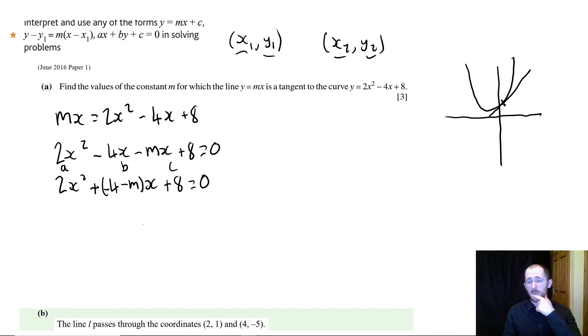Now a is the number in front of x squared, b is the number in front of x, and c is here. So now we need to think about solving this. Well, I can't really use the quadratic formula, because I have an unknown in it, which is no good. So what else can I do? Well, how many times will a tangent meet a curve? Once.